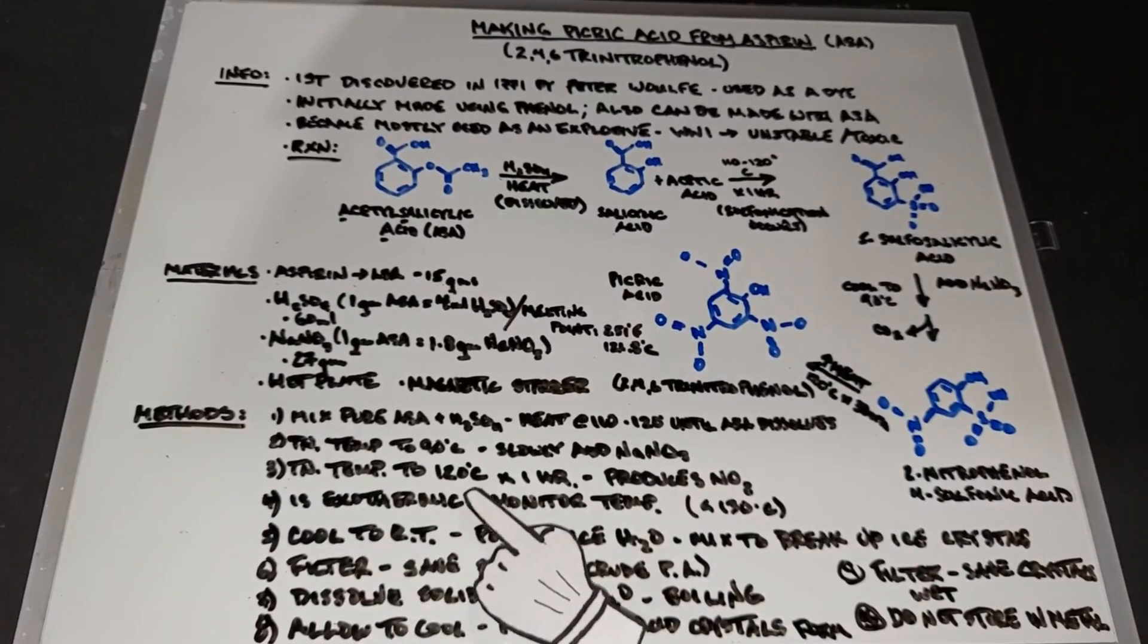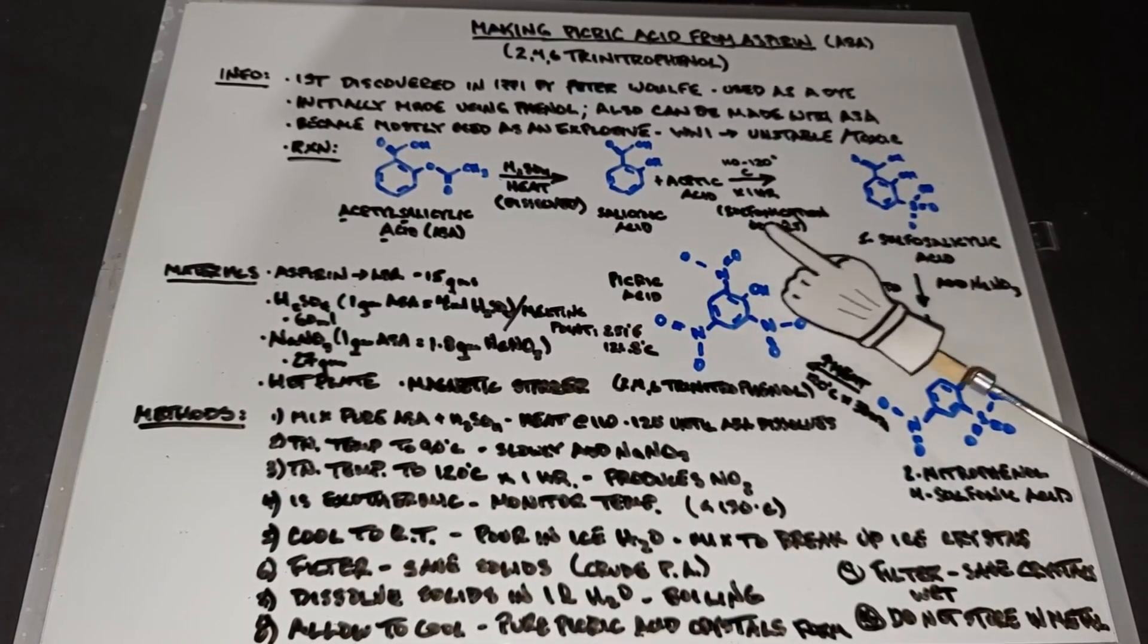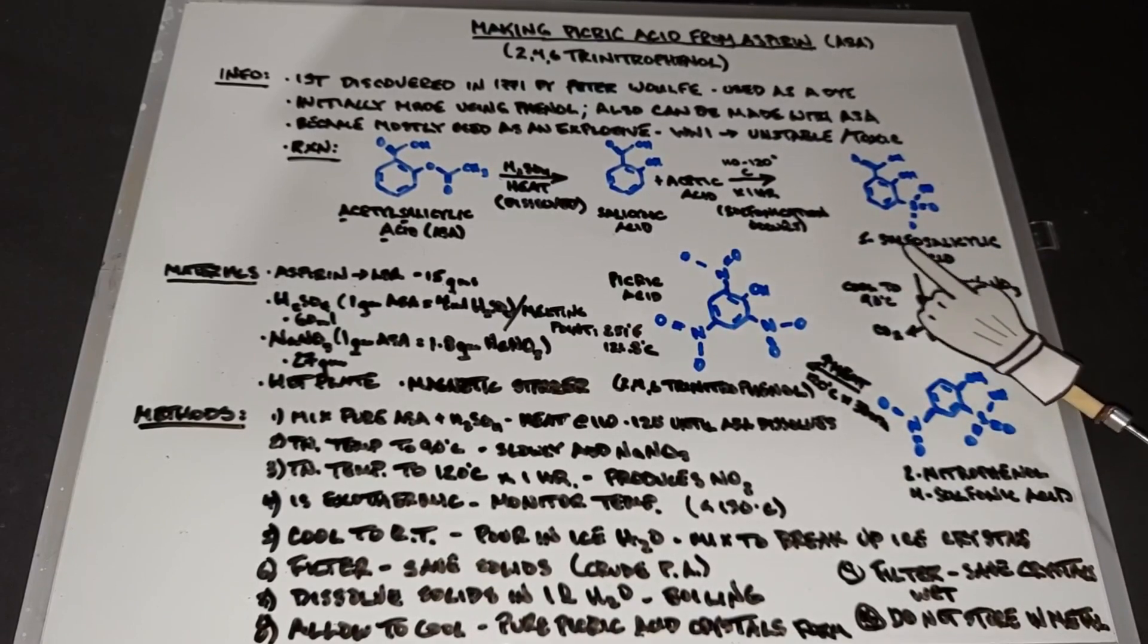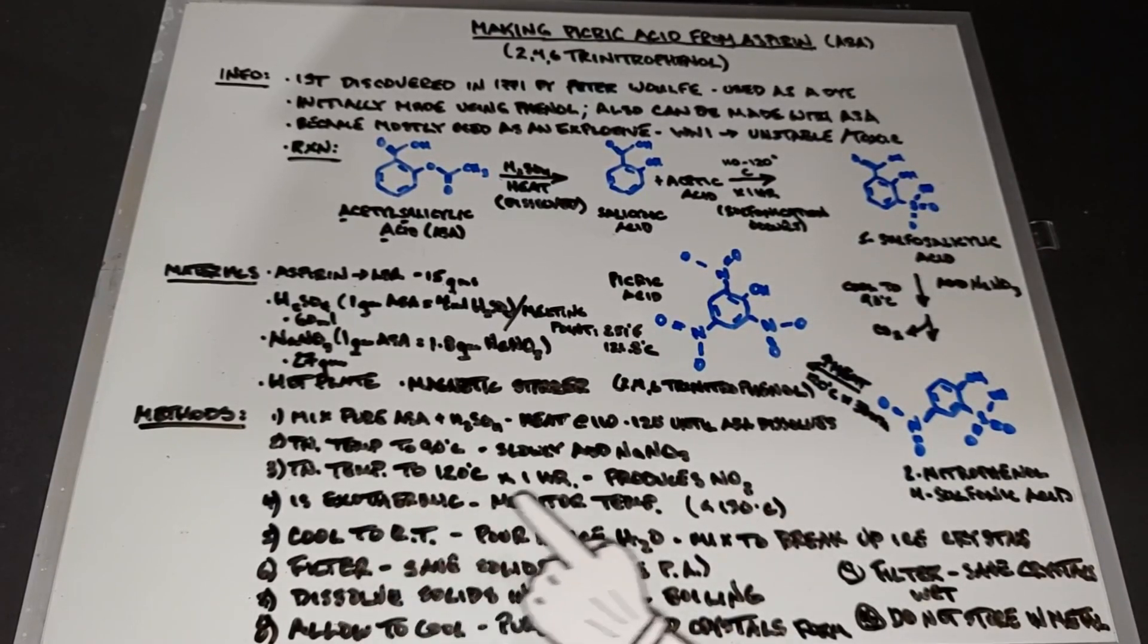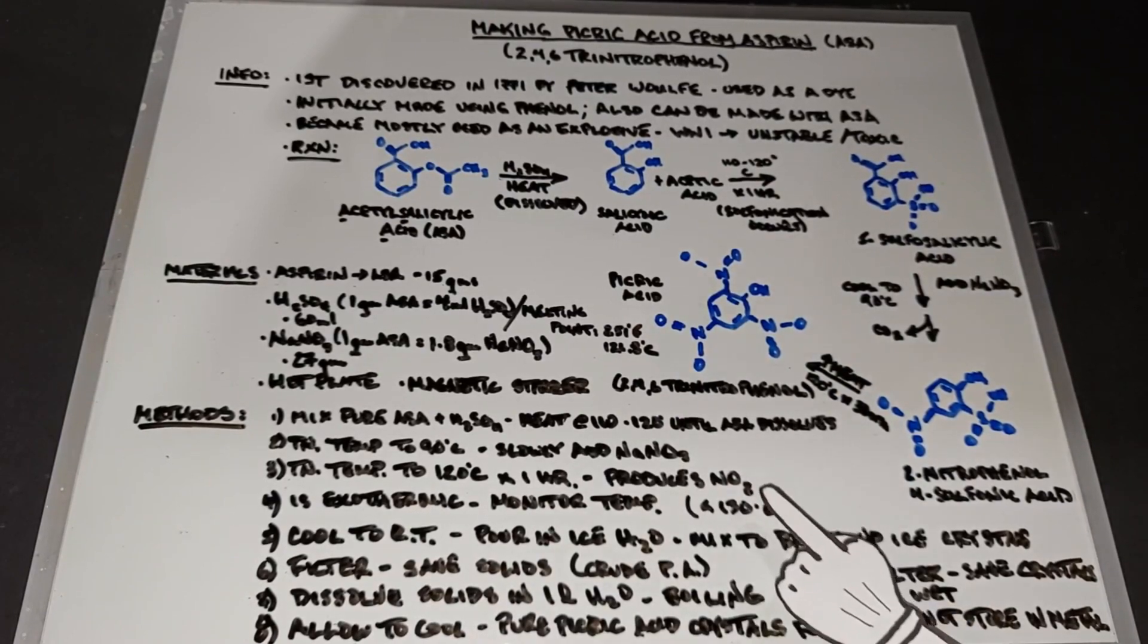After that, we're going to turn the temperature up to 120 degrees for an hour. That's essentially where we were up here, where we're producing the 5-sulfosalicylic acid. We're doing that right now for this one hour in this step. And again, a reminder, it produces nitrogen dioxide gas.